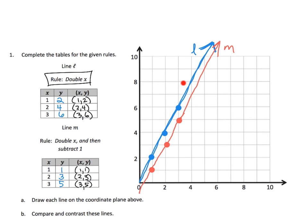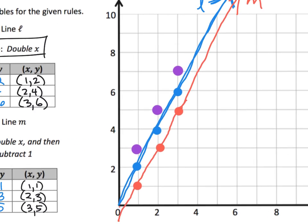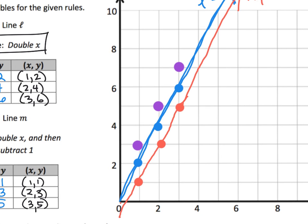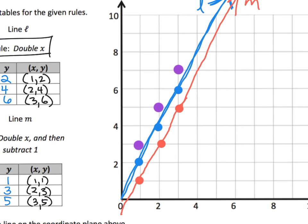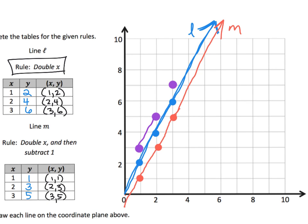If the blue is double x, and the red is double x minus 1, what would it look like if we doubled x and added 1? We want students to understand that each dot, instead of being shifted down, would be shifted up. So our dots would be shifted up, shifted up, shifted up — take the blue dot and shift it up one. Our new line would be parallel to the blue line but shifted up.